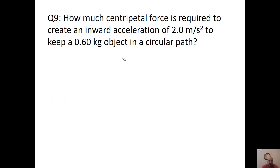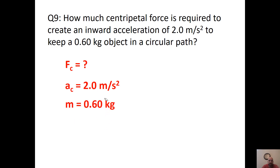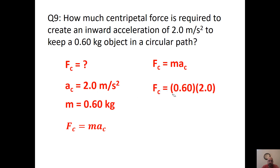How much centripetal force is required to create an inward acceleration of 2 m/s² to keep a 0.6 kg object in a circular path? We're asked for centripetal force, given an inward acceleration and a mass. Centripetal force equals mass times centripetal acceleration. Plugging in our values — 0.6 kg times 2 m/s² — we get a centripetal force of 1.2 newtons inward.